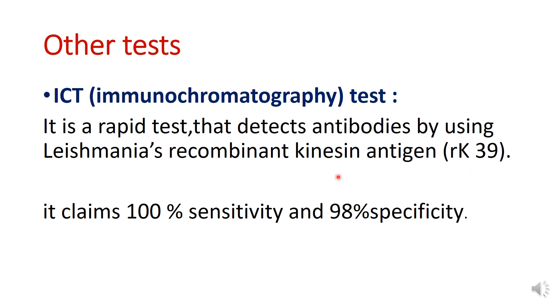So usually for diagnosis of Kala-Azar, we take bone marrow aspirate, and in that we can see amastigote form of Leishmania parasite.